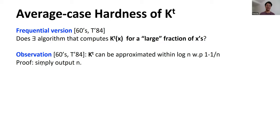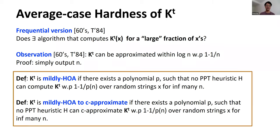Now that KT can be approximated within an additive factor of log n with probability 1 − 1/n, let's discuss the definition of 'KT is mildly hard on average.' We say KT is mildly hard on average if there exists a polynomial p such that no PPT heuristic H can compute KT with probability 1 − 1/p(n) over random strings x for infinitely many n. We say KT is mildly hard on average to c·log n approximate if there exists a polynomial p such that no PPT heuristic H can c·log n-approximate KT with probability at least 1 − 1/p(n) over random strings x for infinitely many n.